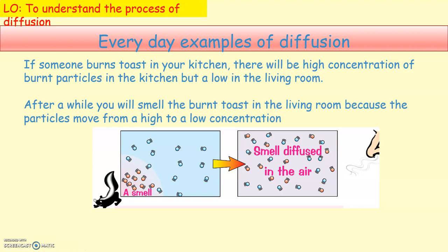For example, if someone burns toast in your kitchen, there will be a high concentration of burnt particles in the kitchen but a low concentration in the living room. After a while, the burnt toast particles will diffuse from the kitchen into the living room, so someone sitting in the living room can smell the burnt toast. The particles diffuse until they are evenly distributed.